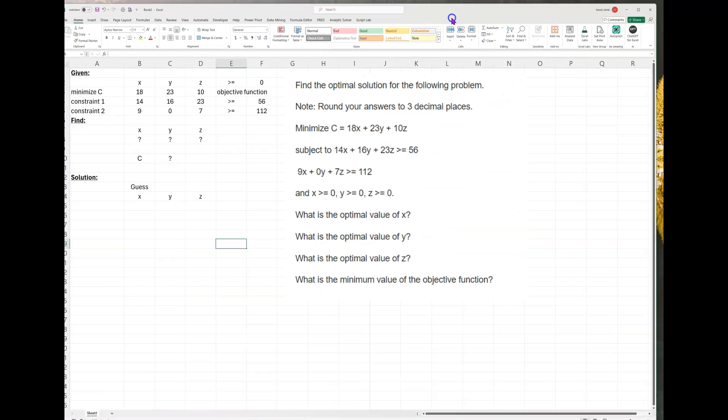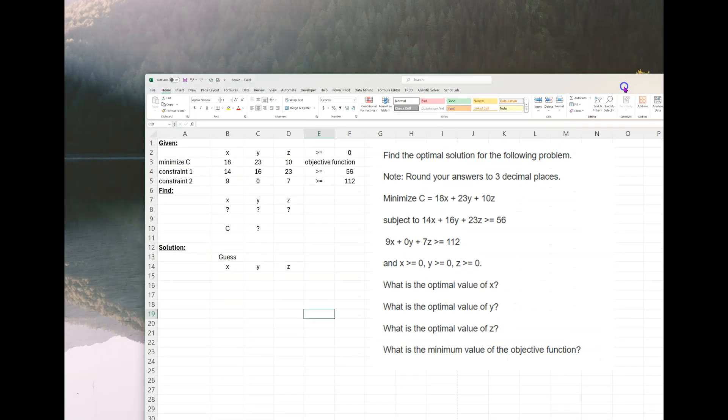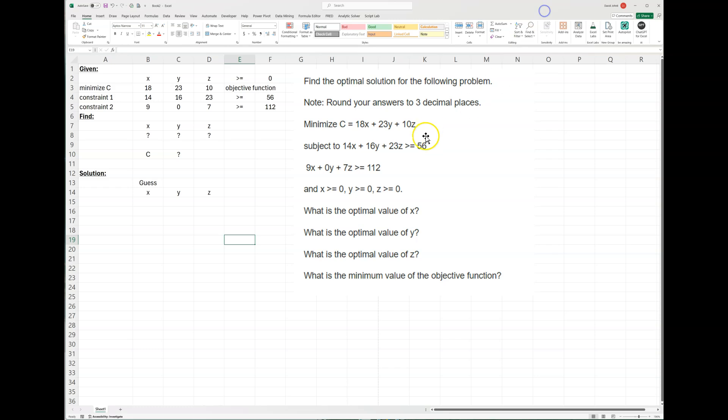I'm going to solve this in a way that's a little different than I normally show on YouTube. First we just want to guess, and I'm just going to use one because one is easier. So I'm going to say one for X, one for Y, and one for Z. That's what we'll minimize C. I'm just making a wild guess using one. I'll show you why that makes sense in a second.